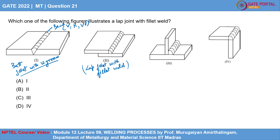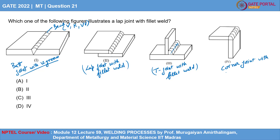Looking at the third figure, this is again a fillet weld but in a T configuration — a T-joint with fillet weld. Looking at the fourth figure, this is a corner joint with fillet weld.